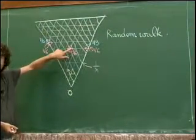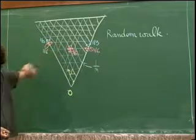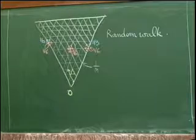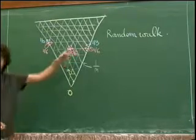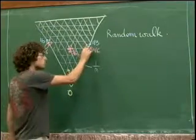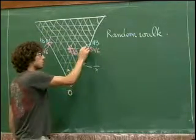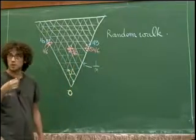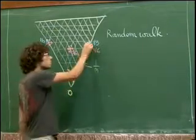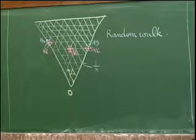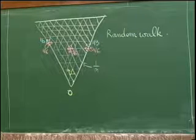Inside it's just a simple random walk — it jumps with probability 1/6 to each of its neighbors. But on the boundary it does something different: it goes 1/6 here, 1/6 here, 1/6 here, it stays on itself with probability 1/6, and it goes along the boundary with probability 1/3. So on the boundary it does not behave like a simple random walk.